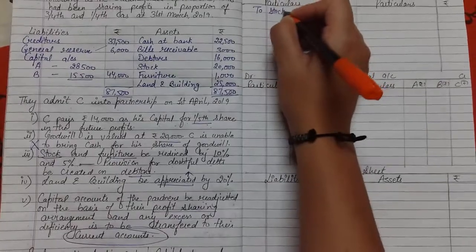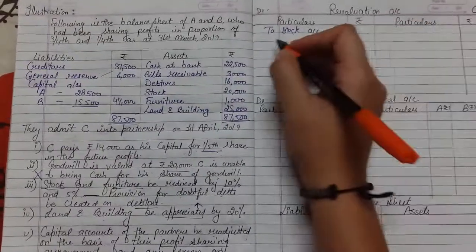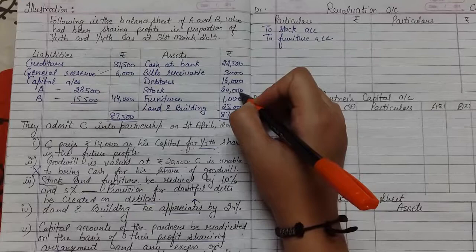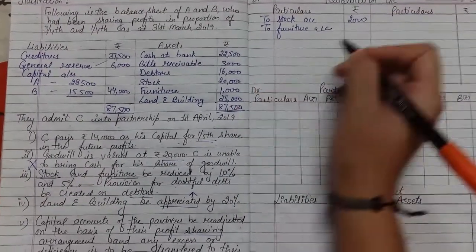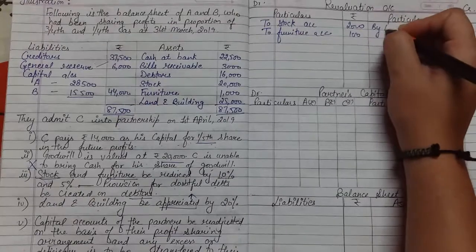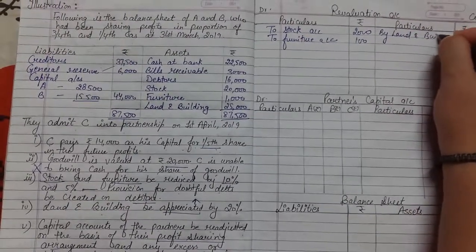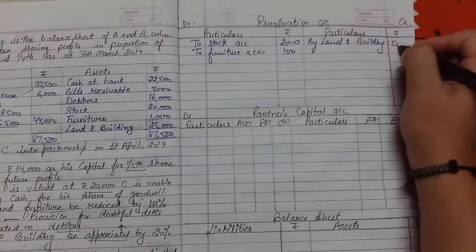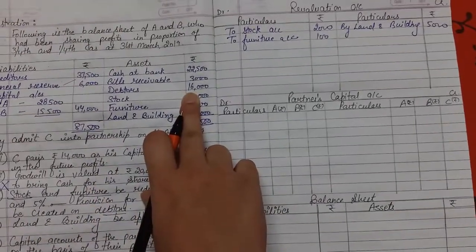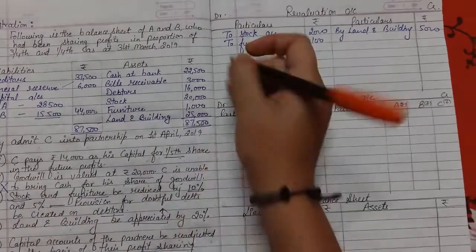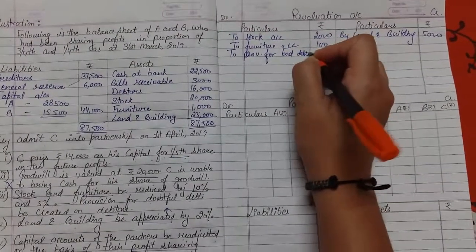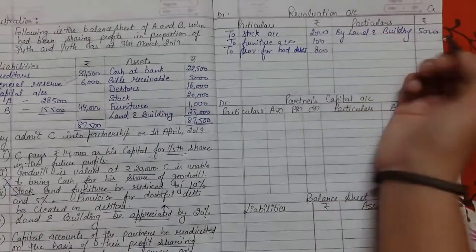Stock and furniture both reduced, so that means if stock and furniture are both assets and they're reduced, they go on debit side. Land and building increased 25,000 by 20%, which comes to 5,000.